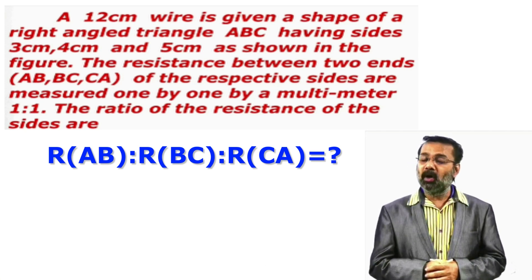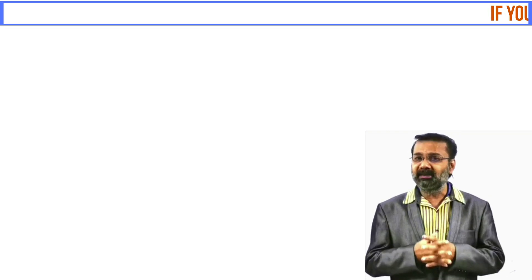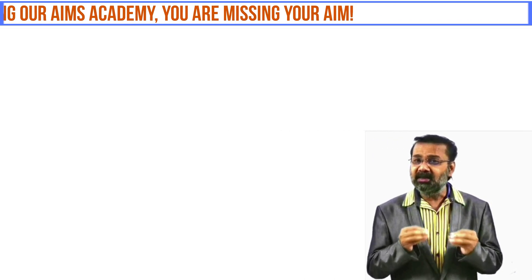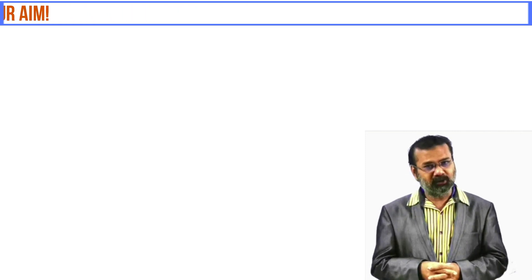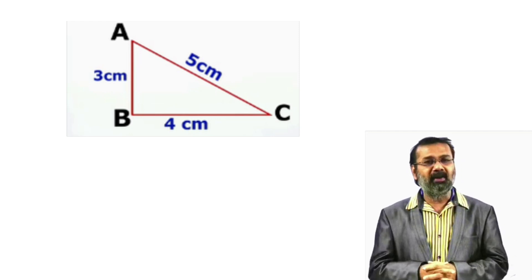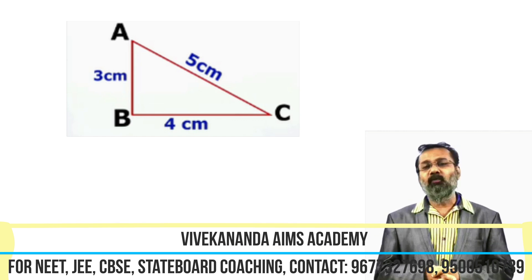To find RAB is to RBC is to RCA, there is no need for any formulas and any concept to go with the sum. Let us go for a very easiest method and a very short, tricky method to find the answer for this question. If you see in the board RAB is to RBC is to RCA, there are three numbers: 3 centimeter, 4 centimeter and 5 centimeter respectively.